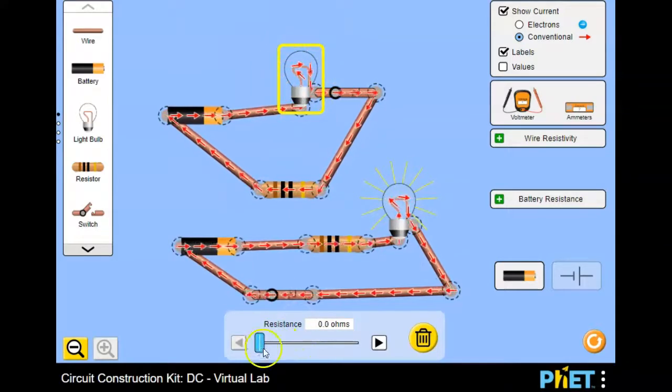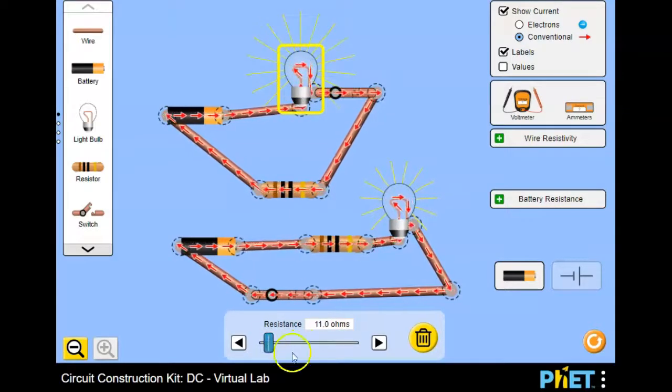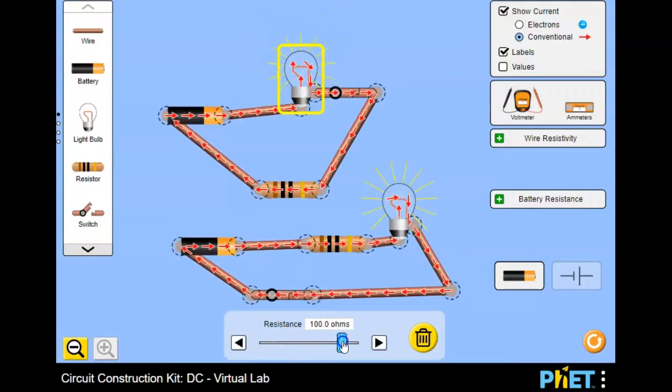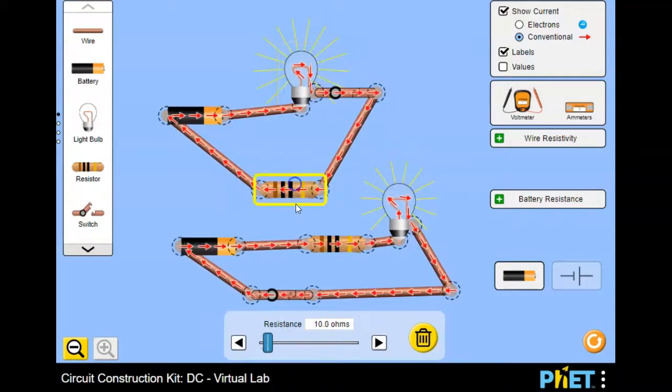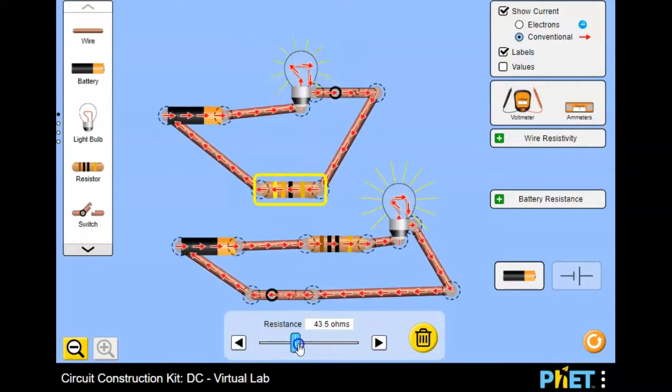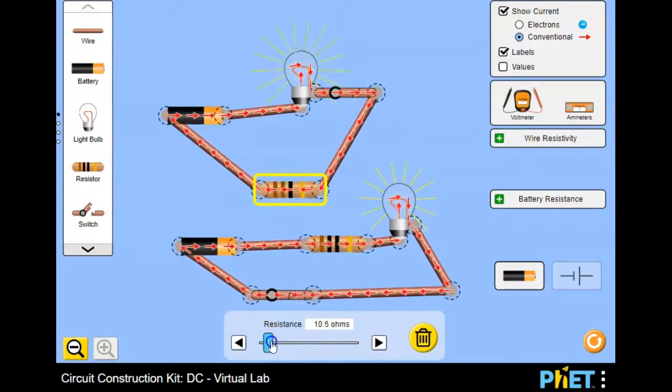The less resistance in the bulb, the brighter it is. The more resistance in the bulb, the less bright it is. Same goes for the resistor. So if I increase the resistance, the bulb becomes dimmer.